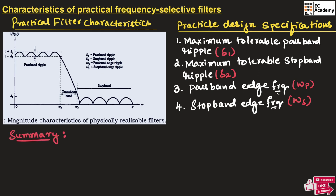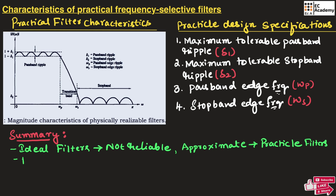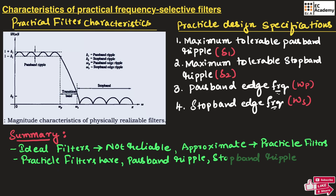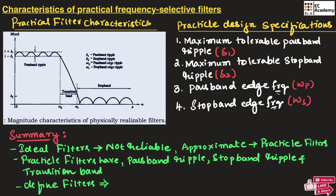To summarize: ideal filters are not realizable, hence we approximate with practical filters. Practical filters have pass band ripple, stop band ripple, and a transition band. We define filters in terms of delta 1, delta 2, omega p, and omega s. We have understood how real filters behave and why they are different from ideal filters. Hope you have understood this topic. Thank you.